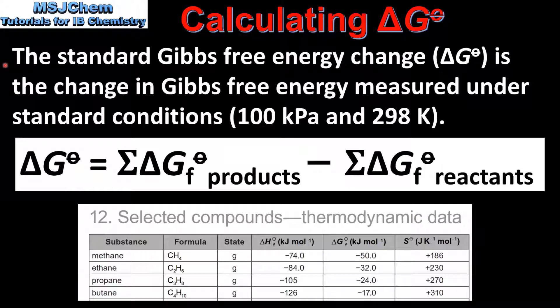So let's start with a definition. The standard Gibbs free energy change is the change in Gibbs free energy measured under standard conditions. These conditions are a pressure of 100 kilopascals and a temperature of 298 Kelvin. Here's the equation that we use to calculate the standard Gibbs free energy change.